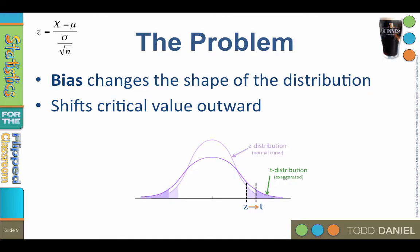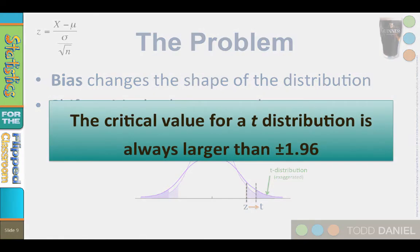Here is your second takeaway: the critical value cutoff for a t distribution is always larger than positive or negative 1.96, unless of course the sample size is the same as the population.